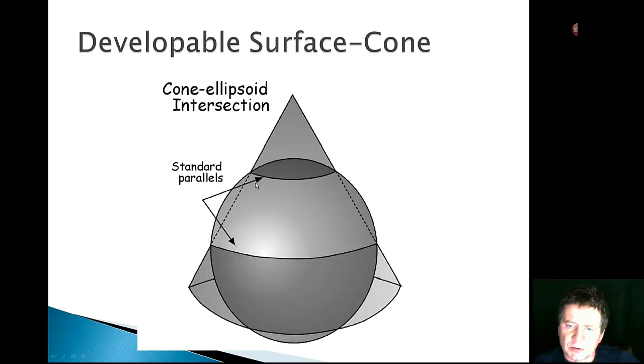So here's the cone being pushed a little bit inside the Earth. So we have a standard parallel round and so at this intersection the map would be correct and this intersection would be correct. In between here and here the map would be compressed and here it would be stretched.